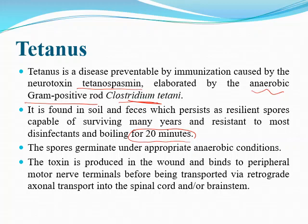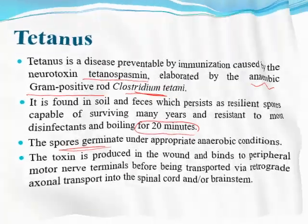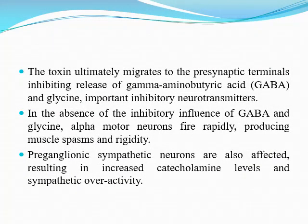When it enters the body, it needs anaerobic conditions to germinate. This usually happens in a dirty wound. The toxin is produced and liberated from the bacteria, then binds to peripheral motor nerves and is transported via retrograde axonal transport into the spinal cord or brain. The toxin ultimately migrates to the presynaptic terminals, inhibiting release of GABA and glycine, the major inhibitory neurotransmitters in the CNS.